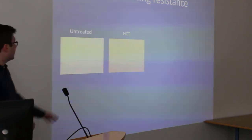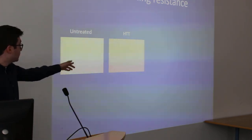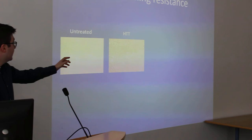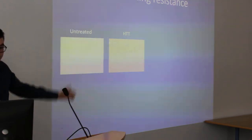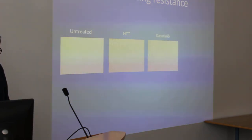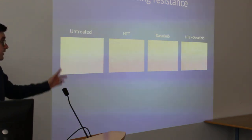You can see here that the cells when they are treated with HER2 targeted therapy, it doesn't respond at all, it's still growing and still healthy. When you treat with the dasatinib, the cells are starting to die. And then when you combine the two, you see cell death. So this is occurring in drug resistant cells.